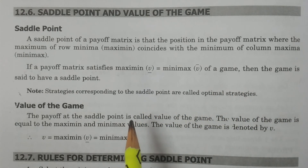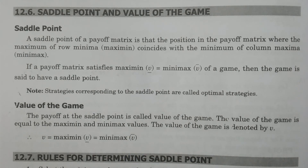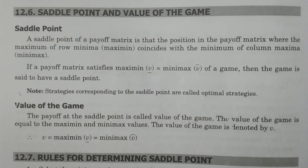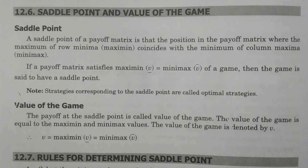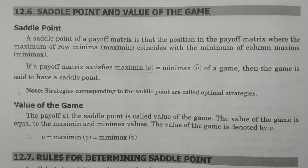The game has a saddle point when the maximin value equals the minimax value. If they are equal, then that particular position exists, and that position is the saddle point. So the saddle point exists when maximin equals minimax.